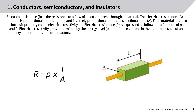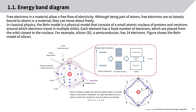Electrical resistance is the resistance to a flow of electric current through a material. It is proportional to length L and inversely proportional to cross-sectional area A. Each material has an intrinsic property called electrical resistivity, rho. Electrical resistance R is expressed as a function of rho, L, and A. Electrical resistivity rho is determined by the energy level band of the electrons in the outermost shell of an atom, crystalline states, and other factors.